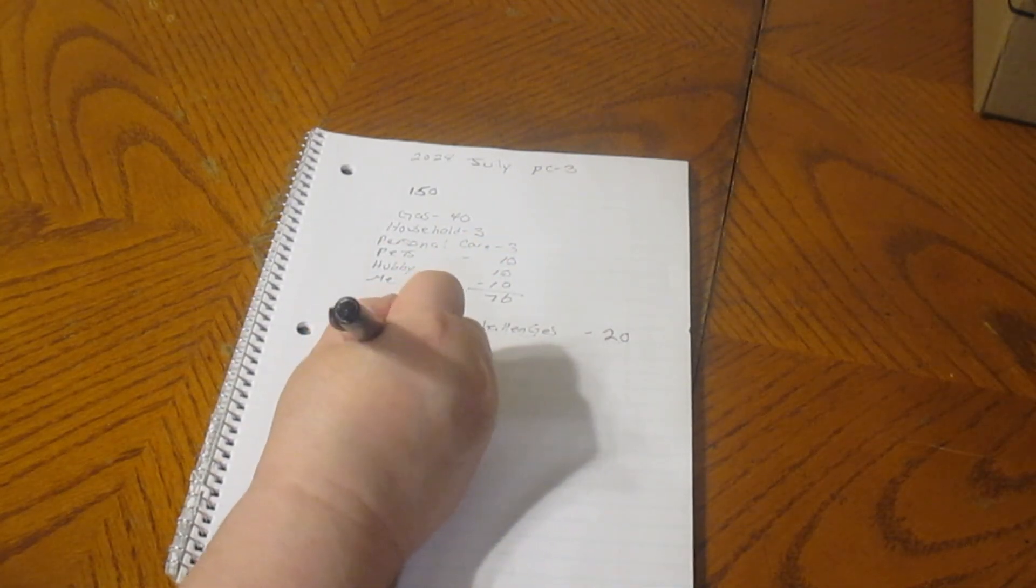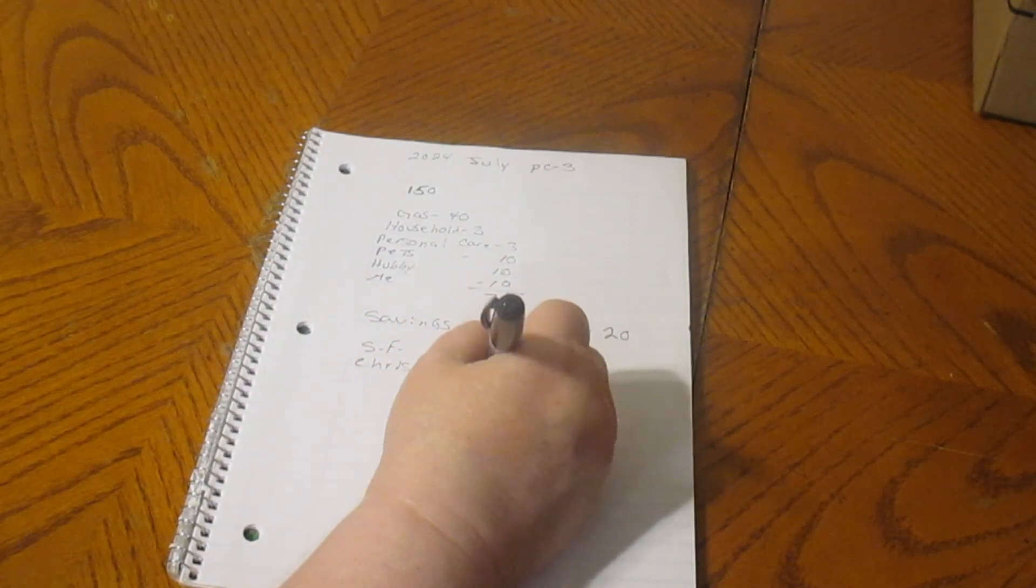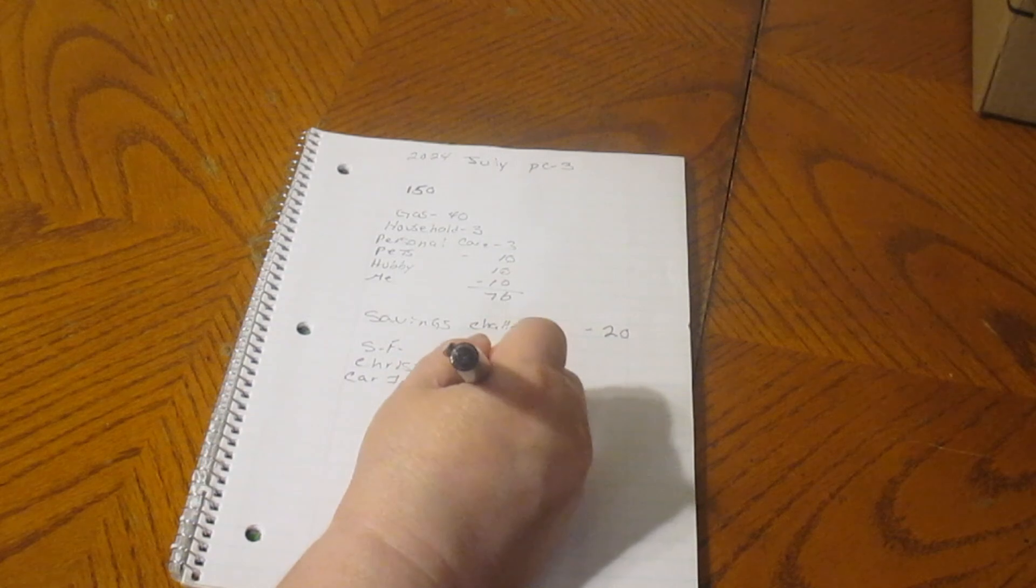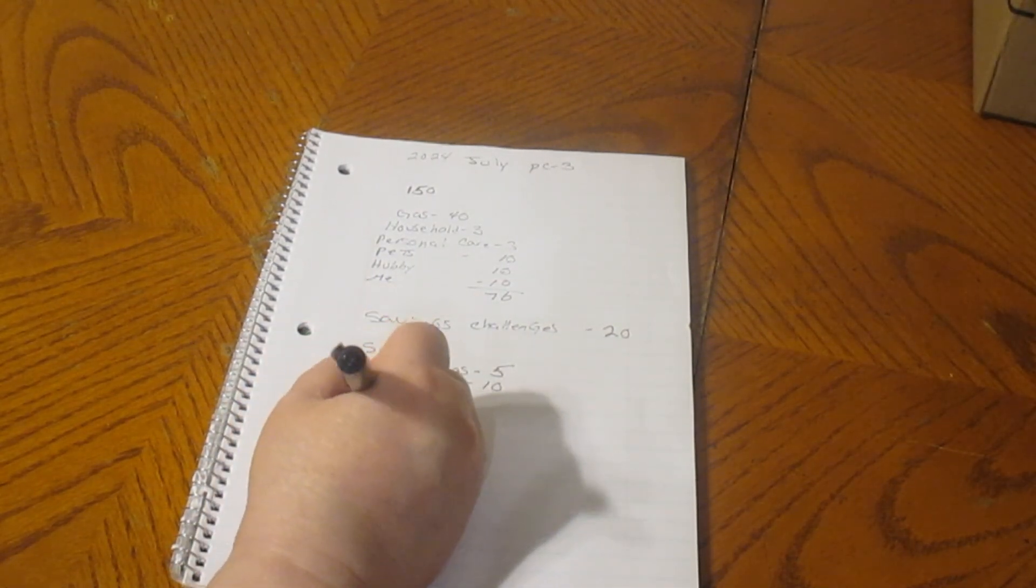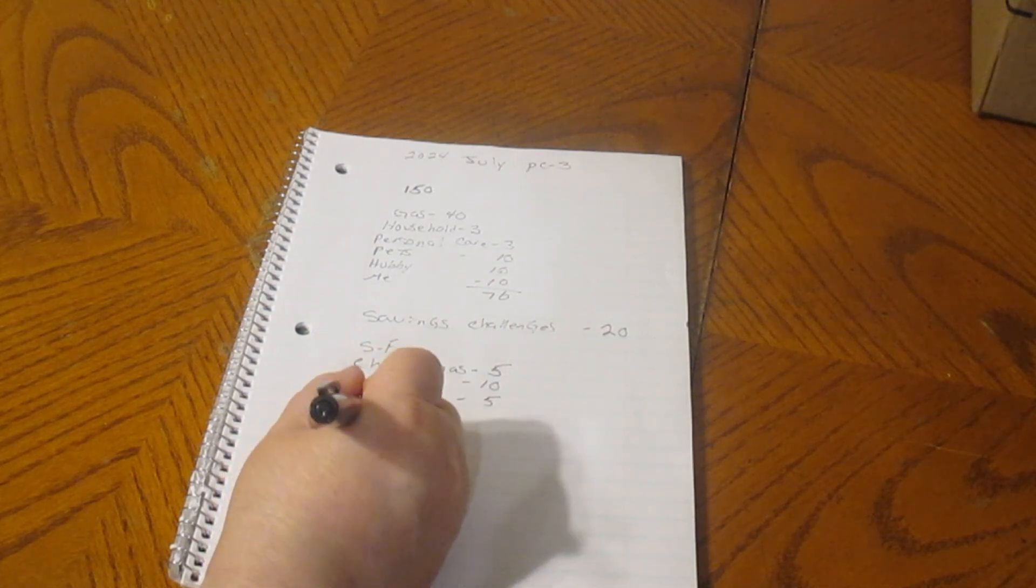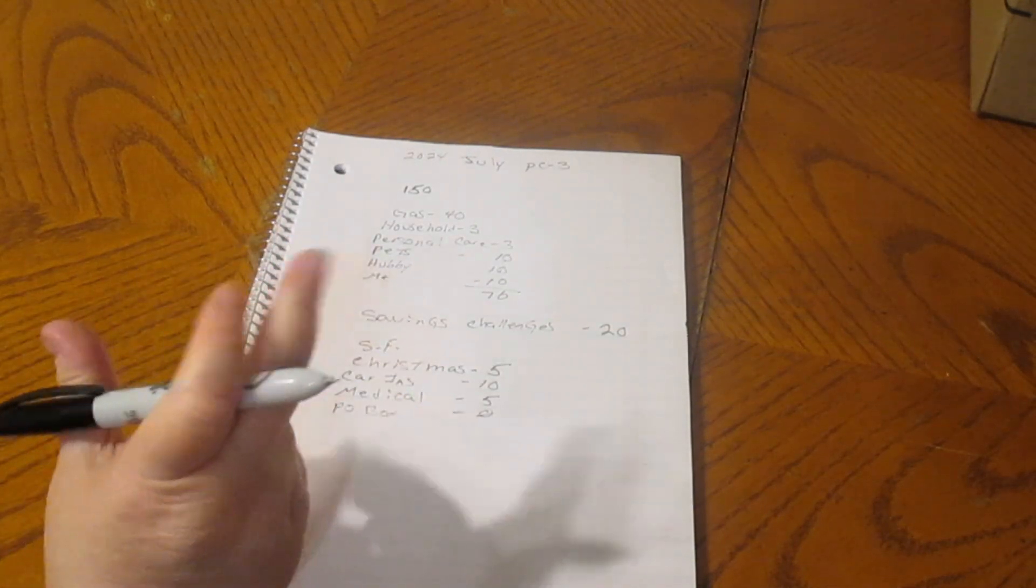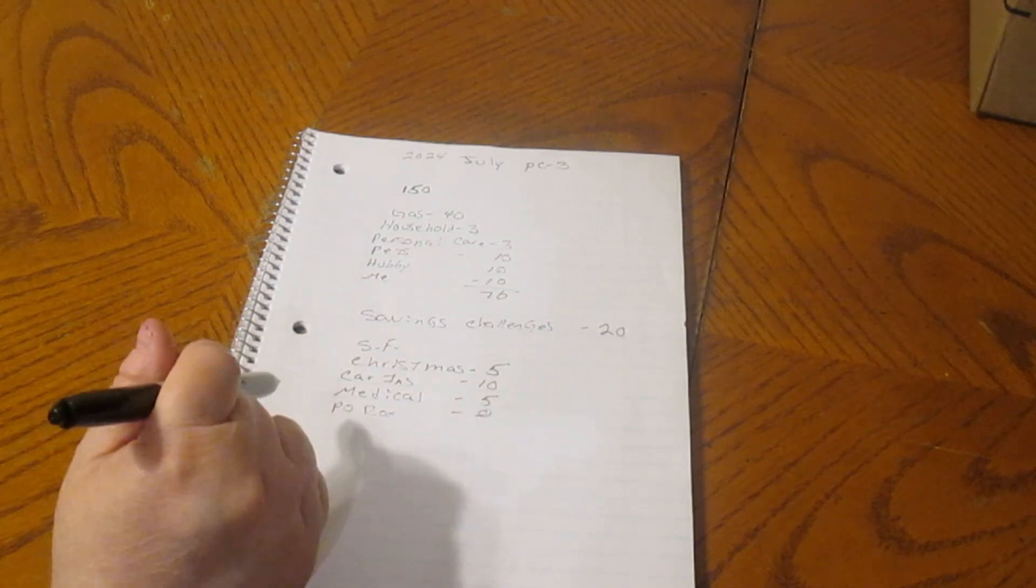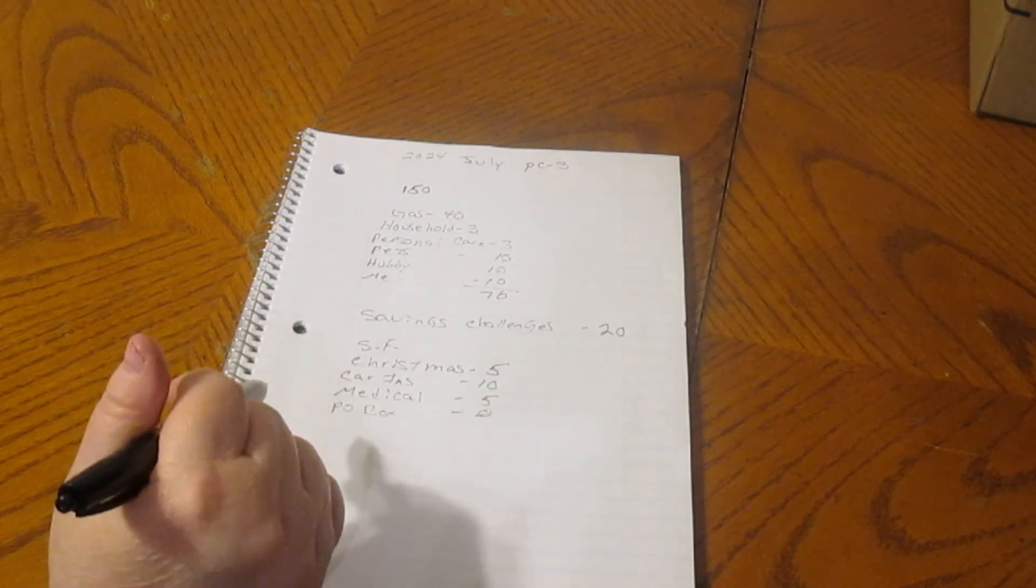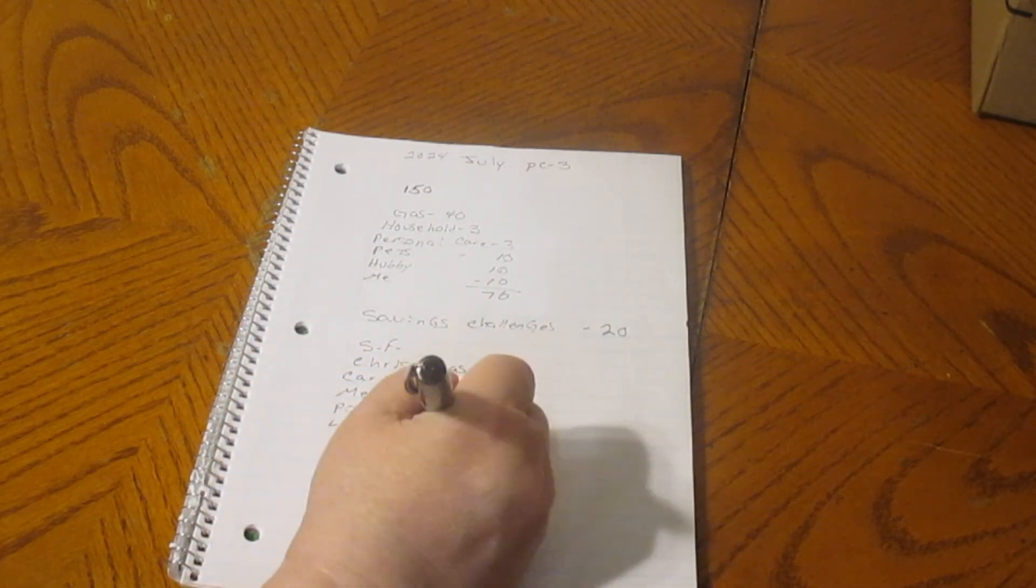Then we have our sinking funds and we have Christmas. And that's going to be $5. Our car insurance is going to get $10. Medical is going to get $5. P.O. box is not going to get anything. It's fully funded for the year. We won't start this back up until probably December because my P.O. box is due in November. I will start that up in December and then we'll start taking it out for the P.O. box again. And then we have lawn for $2.